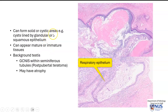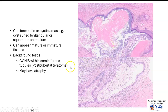Teratomas can form solid or cystic areas. In this particular case, we saw cystic structures lined by mature stratified squamous epithelium. The tissues can appear mature or immature, and sometimes even somatic type malignancies such as adenocarcinoma can arise in the background of a teratoma. In the case of post-pubertal teratomas, the background testes may show germ cell neoplasia in situ.